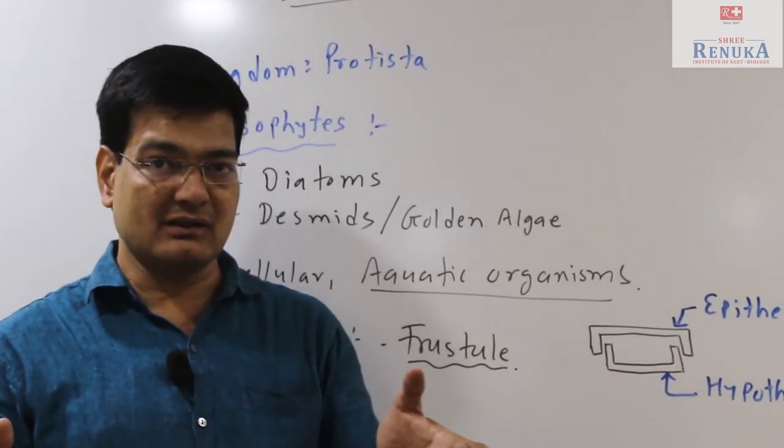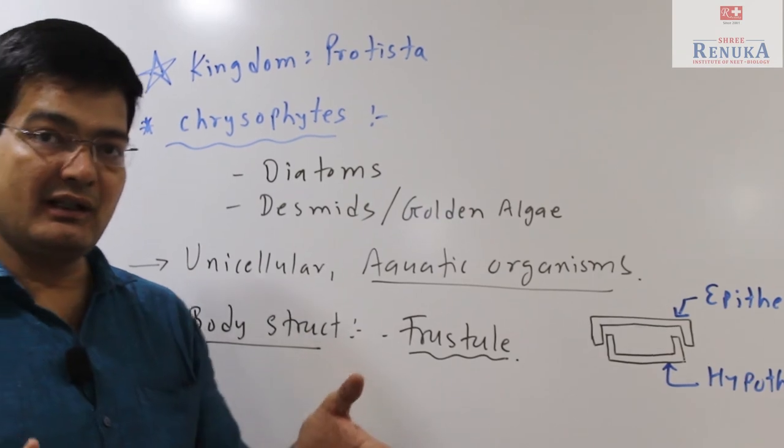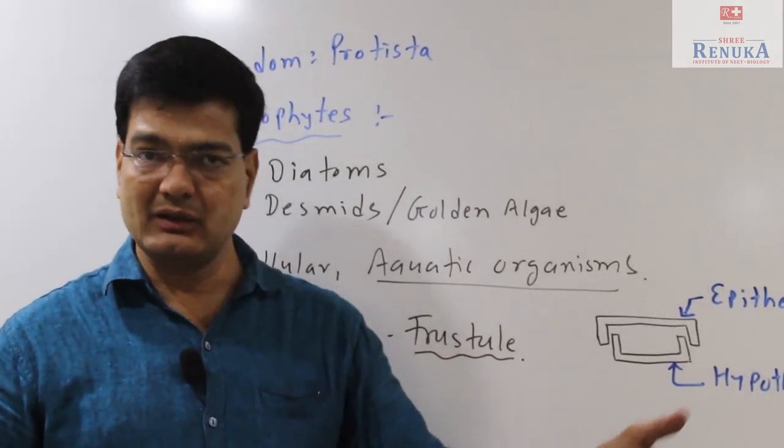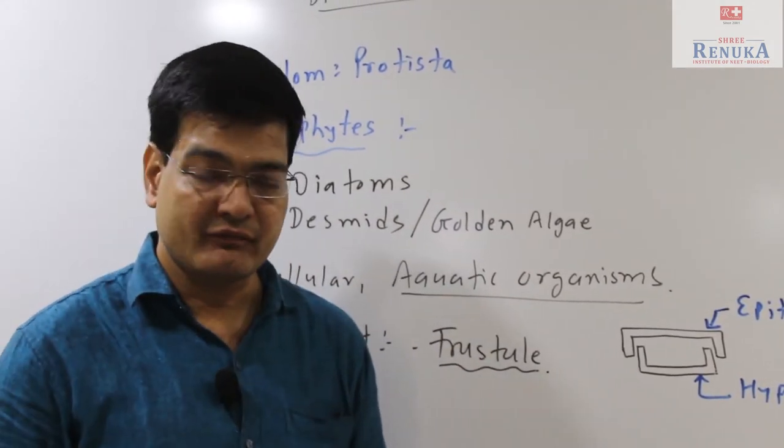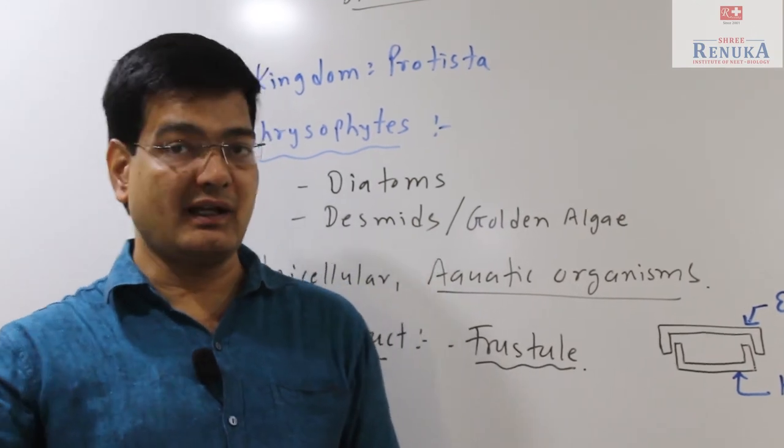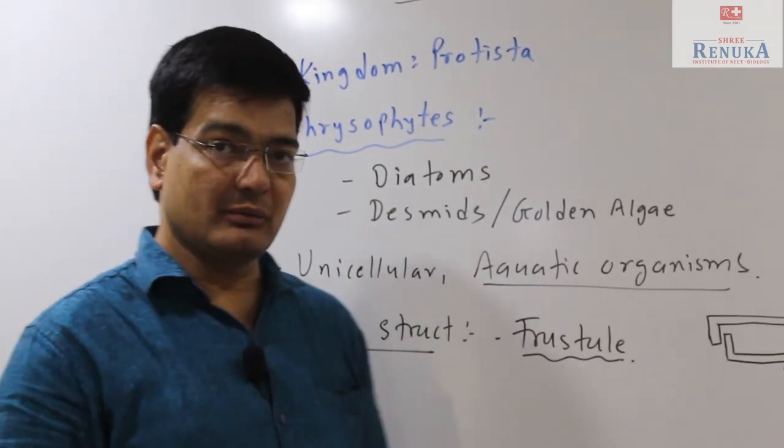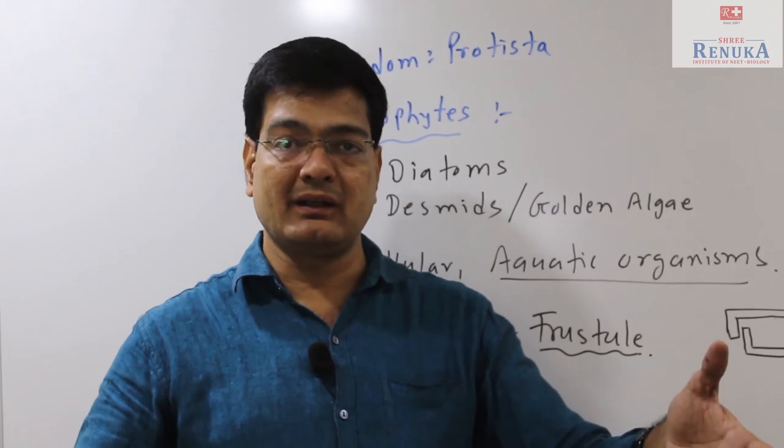Students, this structure is formed of silica and it accumulates at the bottom or the base of the oceanic region. Gradually, after a long time, if we look at the bottom of the ocean, it accumulates and gets transformed into a big rock-like structure in appearance. This structure is now called diatomaceous earth.